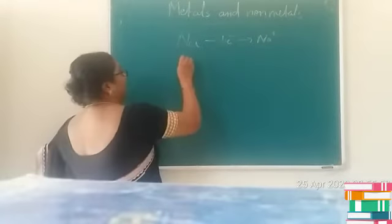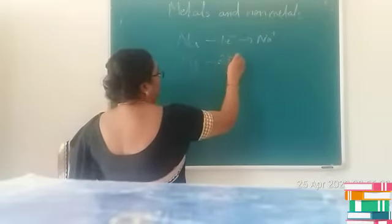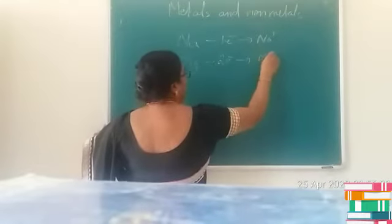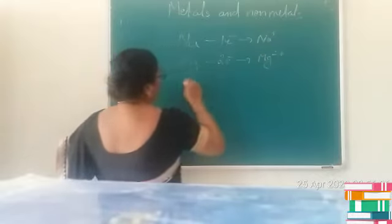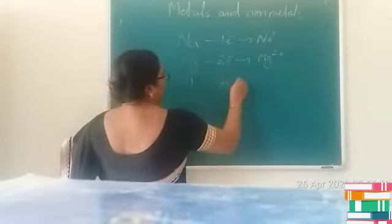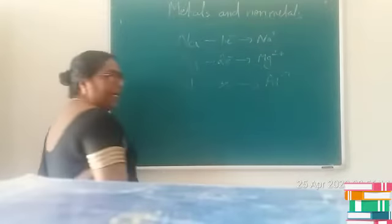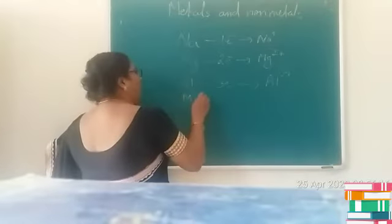Similarly, if you consider magnesium, to attain stability magnesium generally loses two electrons and forms magnesium ion. Or if you consider aluminium, aluminium generally loses three electrons and forms aluminium ion.